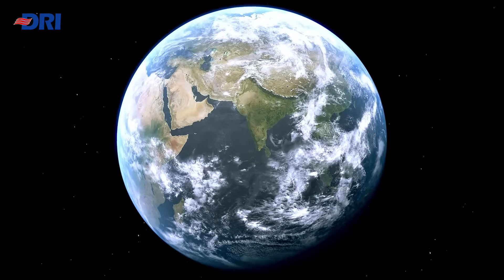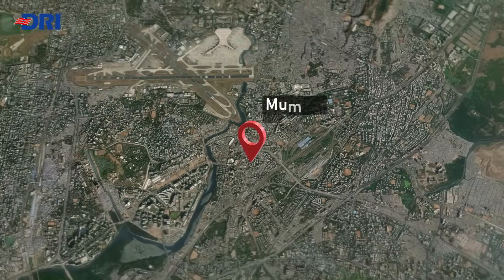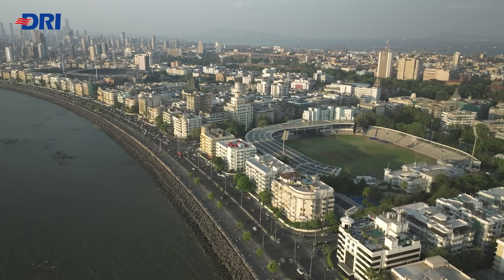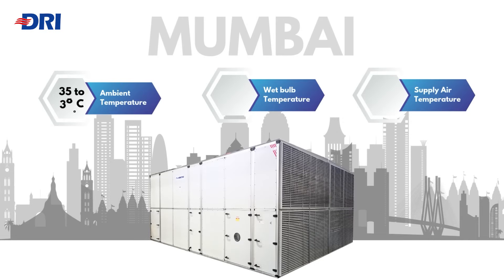Now consider a different climate like Mumbai, which experiences both high temperatures and elevated humidity levels. During peak summer, outdoor temperatures can reach 35–38°C with a maximum wet bulb temperature of around 26–28°C. Despite these challenging conditions, an IDEC system can still provide efficient cooling, reducing supply air temperatures to approximately 24–26°C. This represents a significant energy-saving alternative to traditional air conditioning systems, while maintaining indoor comfort even in humid climates.